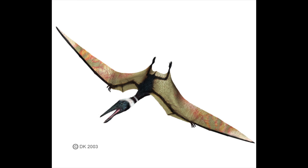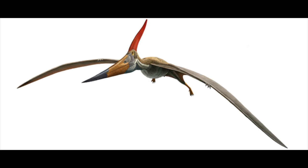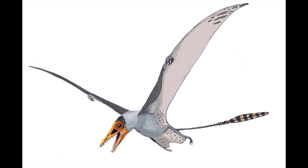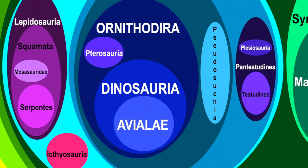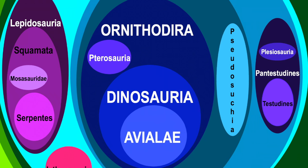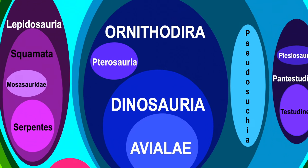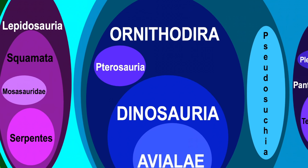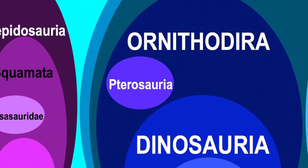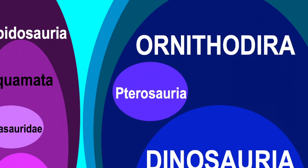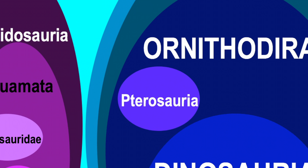First, let's talk about the flying reptiles known as Pterosaurs — even though the public likes to call them Pterodactyls, that name only applies to the one specific genus. This also includes classic favorites like Pteranodon. As you can see here, Pterosaurs are not in the group entitled Dinosauria, but just outside of it. In fact, Pterosaurs and Dinosaurs are very closely related and together make up the group Ornithodira. However, Pterosaurs are not dinosaurs, and they never have been. They're still cool — they just aren't dinosaurs.